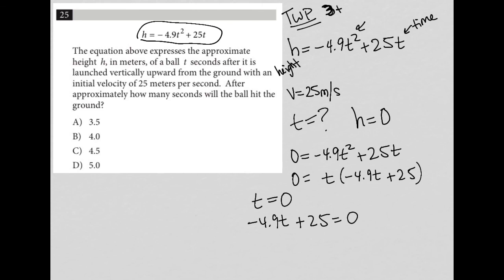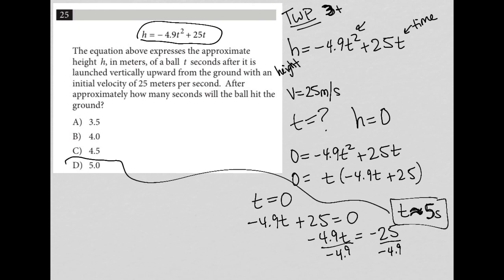So I can subtract 25 from both sides, which would leave me with negative 4.9 T equals negative 25. Divide both sides by negative 4.9. And I basically get T is, I'll just say approximately, but it's super close. T is equal to 5. 5 seconds. And therefore, my final answer here is D.